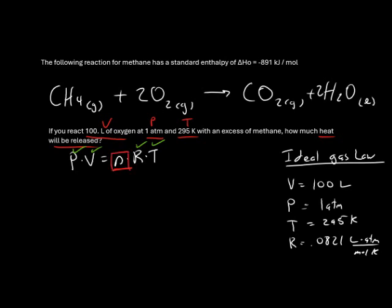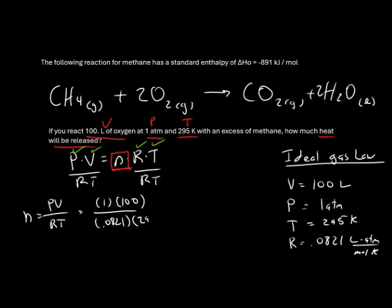If we divide both sides of the equation by RT, our new equation will look like this: N equals PV divided by RT. Since we know all of the letters, let's place them in the correct positions. Pressure was 1 atmosphere, volume was 100 liters, R is 0.0821 liter atmospheres per mole Kelvin, and temperature is 295.